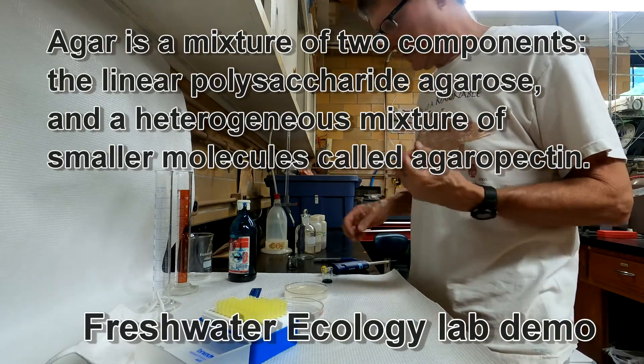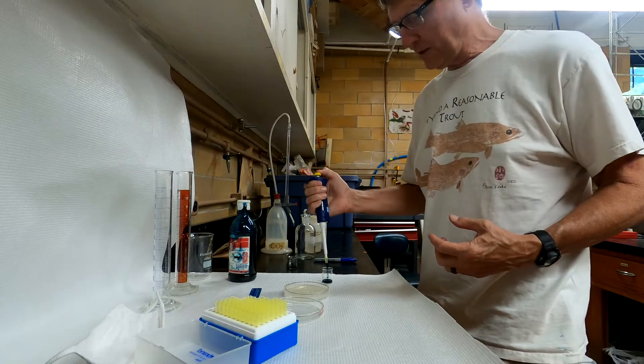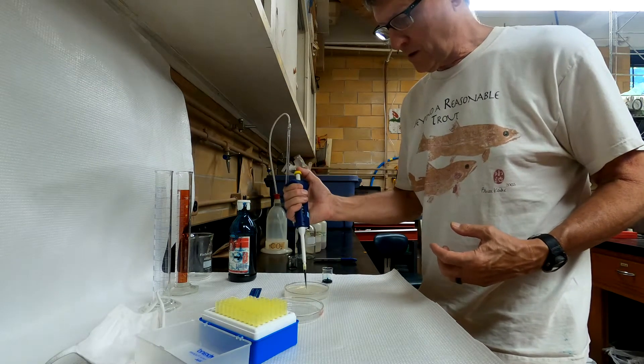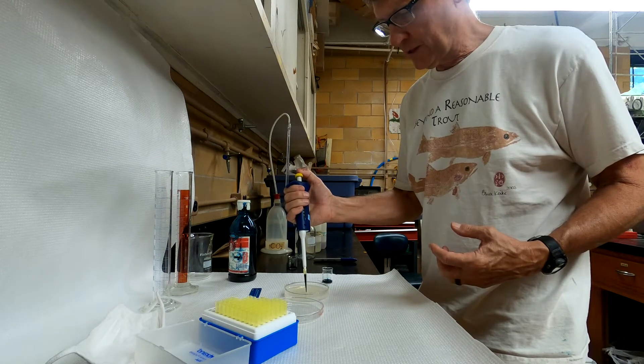So what we'll do is we'll take some of this blue dye and take 200 microliters of it, and set it in a small spot, right in the center of the dish.